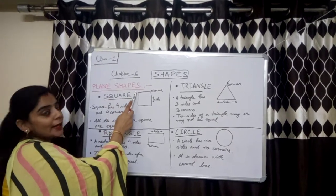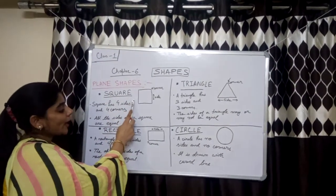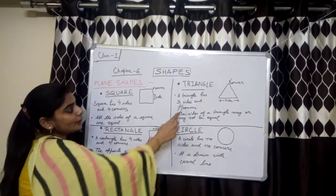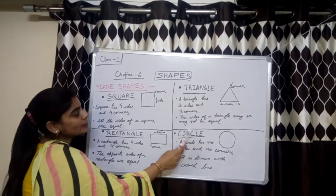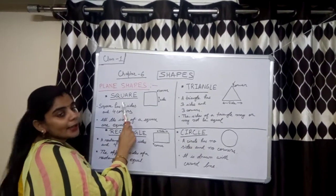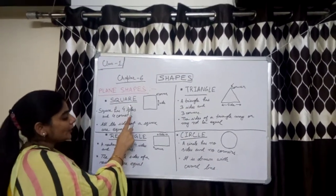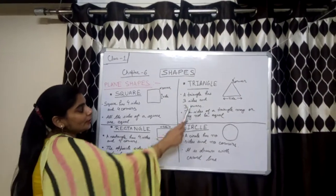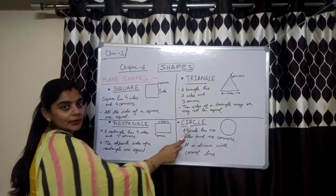Plane shapes are: square, rectangle, triangle, and circle.